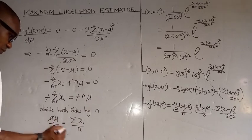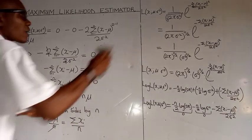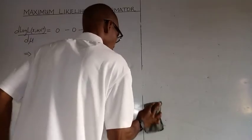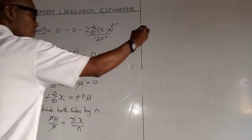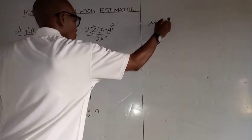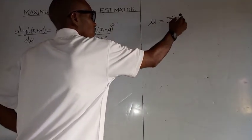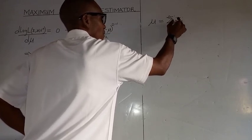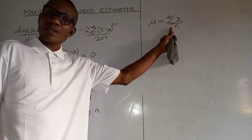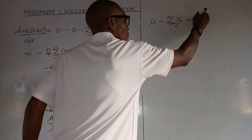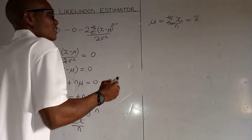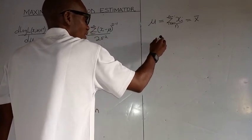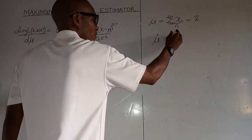We divide both sides by n, so this cancels and we are left with mu. We have that n times mu equals the summation of x_i from i equals 1 to n. Of course, we know that this is our sample mean. Therefore, the maximum likelihood estimator for mu is equal to the sample mean: x-bar equals summation of x_i over n.